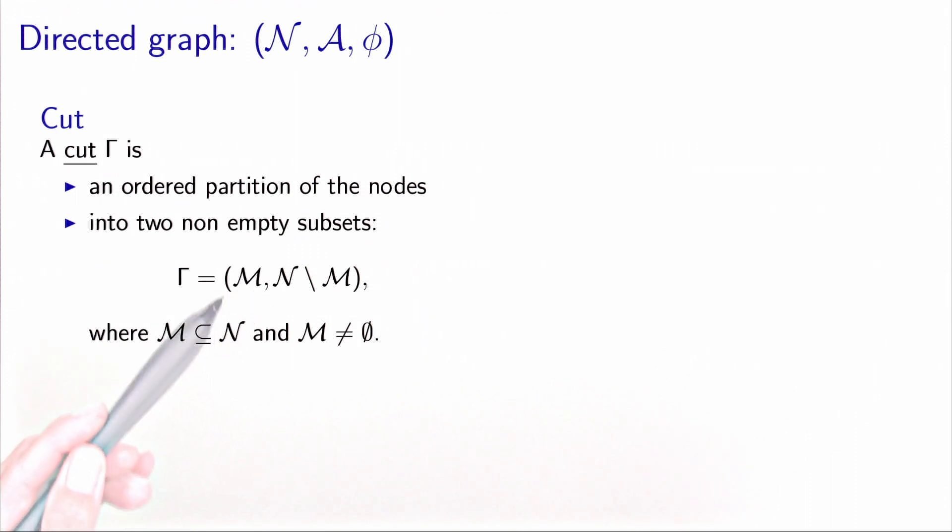One that is called M, which contains a subset of the nodes, and the second one which is all the other nodes, so the N minus M. And we assume that the set M here is non-empty.